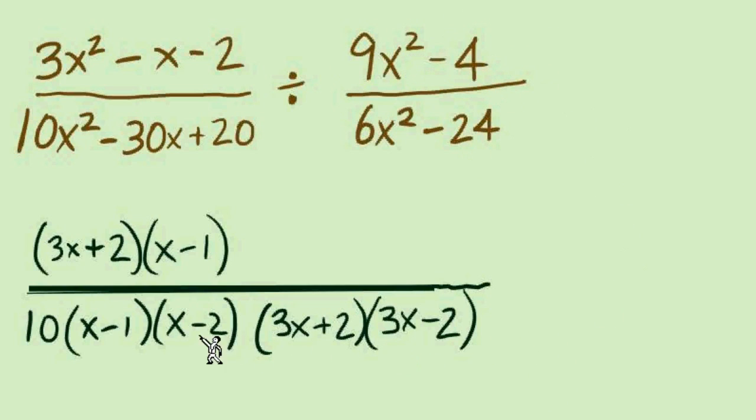We will take our factors from the denominator and put them in the numerator. There's the GCF 6, and the factors (x + 2)(x - 2). Now we get to do the canceling.